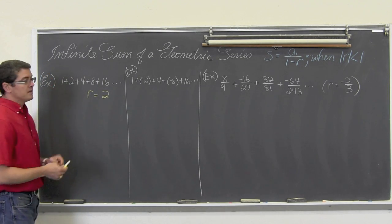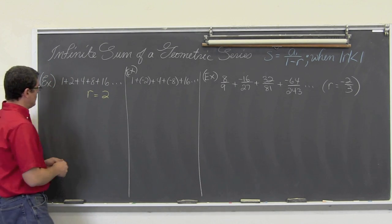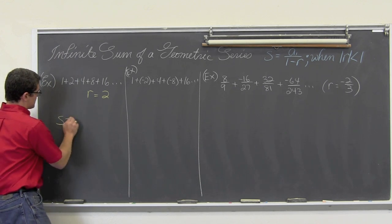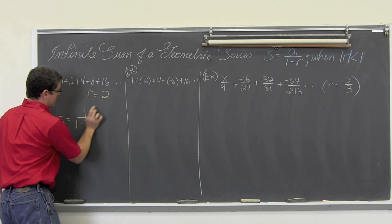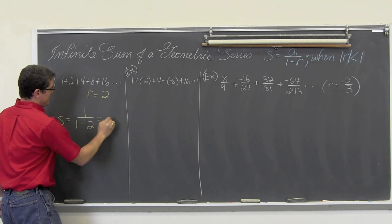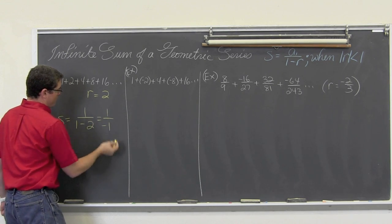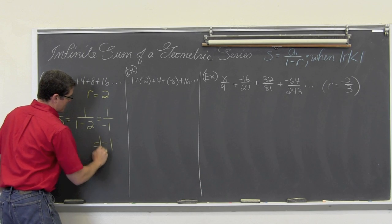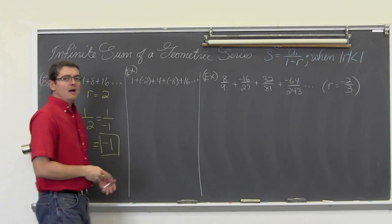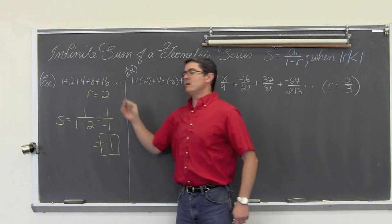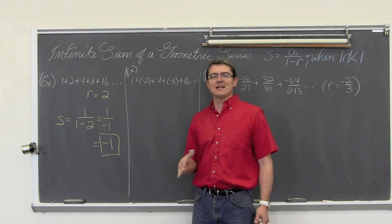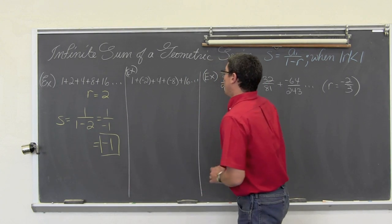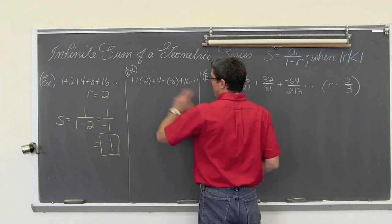Now, what if you did not catch that? Well, you would work out the formula s is equal to a sub one over one minus r, which is two. That becomes one over negative one, which gives you an answer of negative one. How are you going to add a bunch of positive values and get a sum which is negative? It is impossible. It is not going to happen.